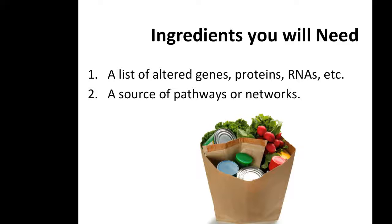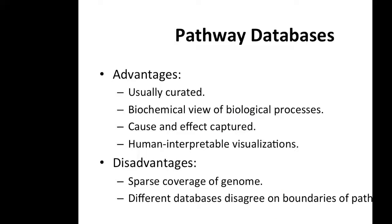Regardless of whether you're doing analysis on pathways or networks, you need two essential ingredients: one is your experimental list of altered genes, proteins, or RNAs from the tumor you're studying; and the other is a database from which you can get pathways or networks. We're going to talk about pathway databases first, then network databases. Pathway databases are typically human-curated collections of pathway information from the literature.